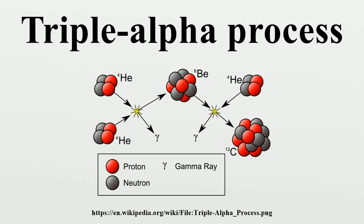As a side effect of the process, some carbon nuclei can fuse with additional helium to produce a stable isotope of oxygen and release energy. 12C plus 4He yields 16O plus gamma, the C-alpha process.